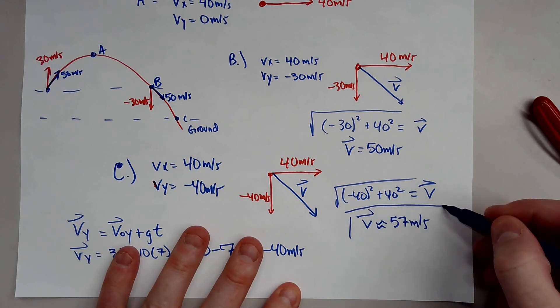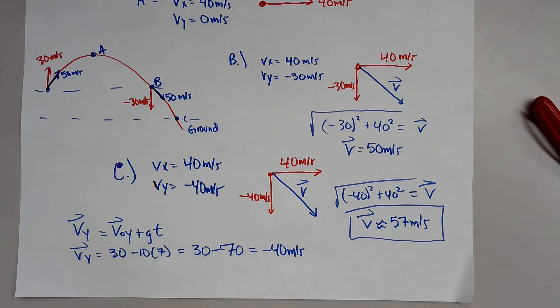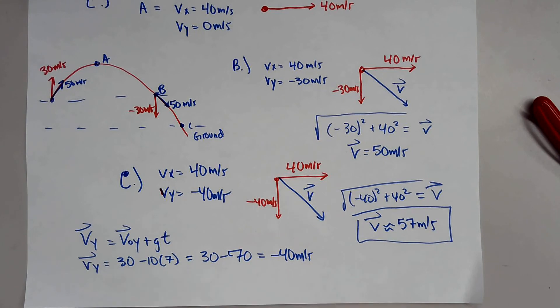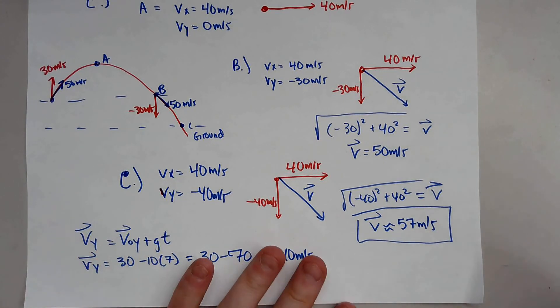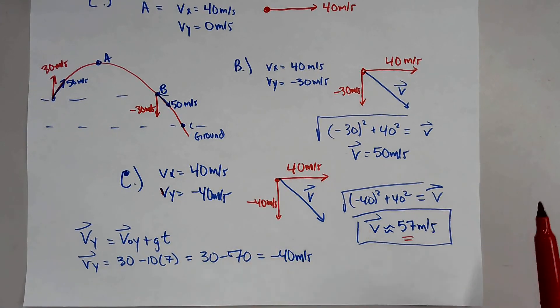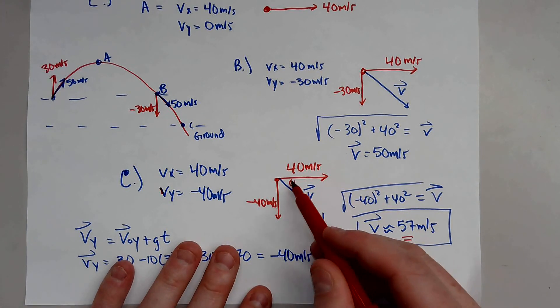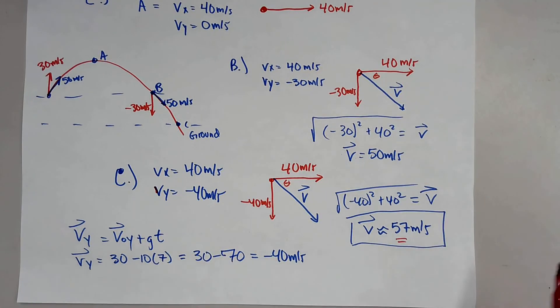So that is how fast the object is going at point C. Notice it only asks for the speed and not the angle. If it asks for the velocity, you'd have to use trigonometry to find these angles. So I hope this video helped. If so, give me a thumbs up and a like, and please subscribe for more juicy physics content. Thank you, have a great day.